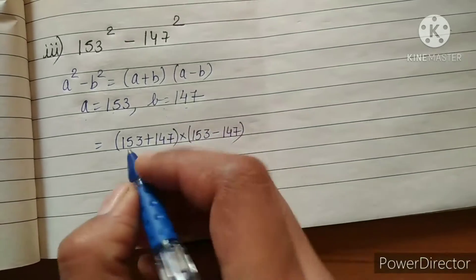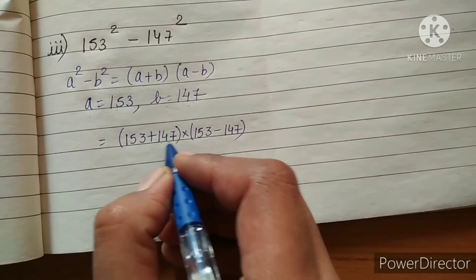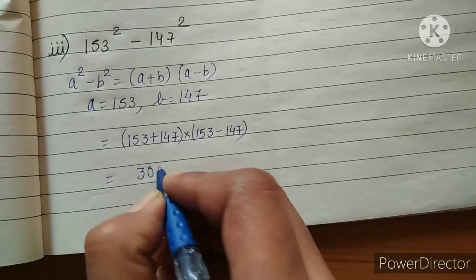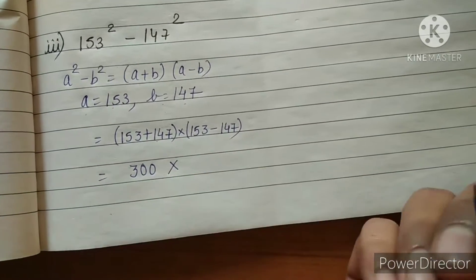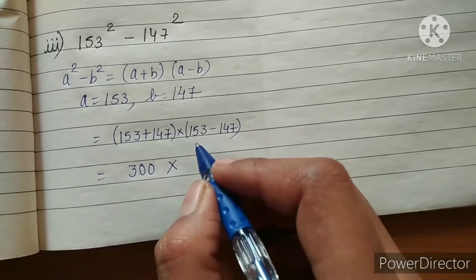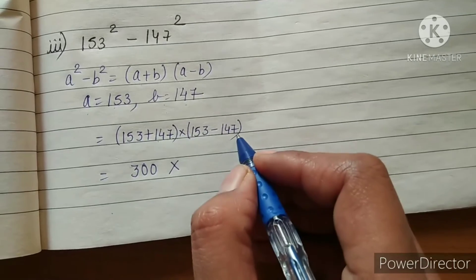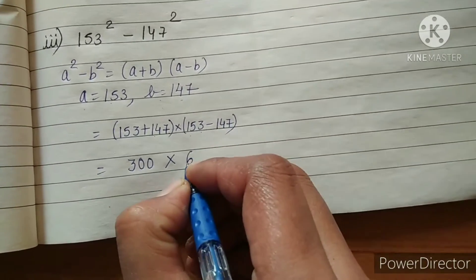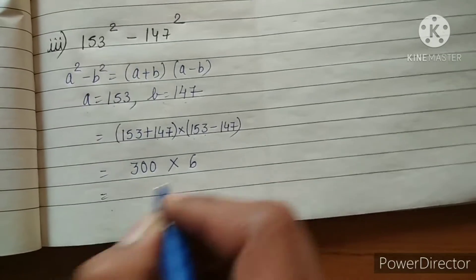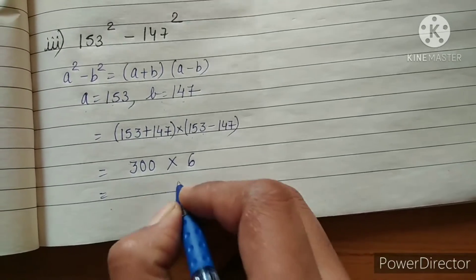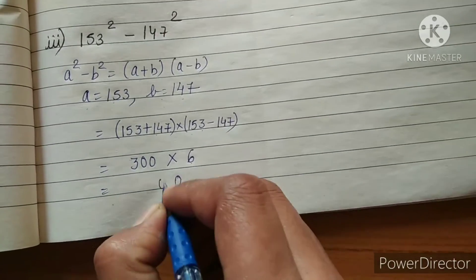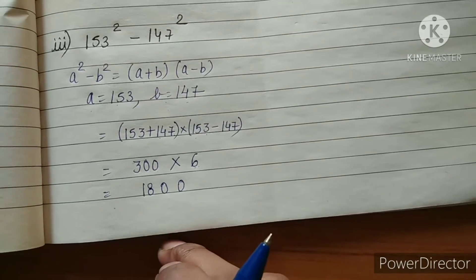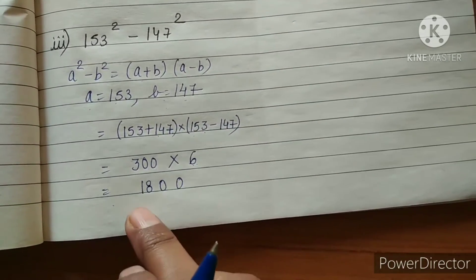Adding 153 plus 147 gives 300, multiplied by 153 minus 147 which gives 6. 6 zeros is 0, 6 zeros is 0, 6 zeros is 0, and 6 threes are 18. The answer for part 3 is 1800.